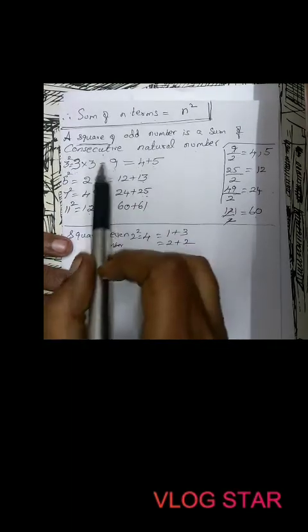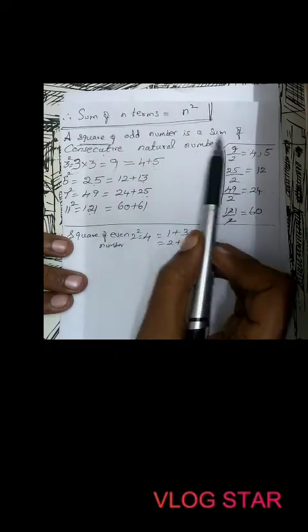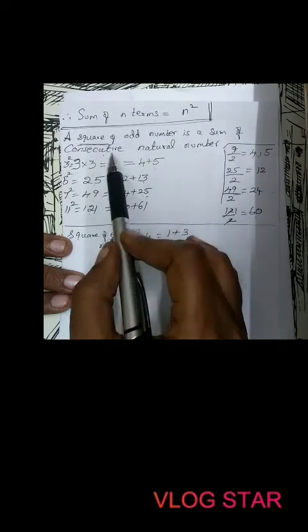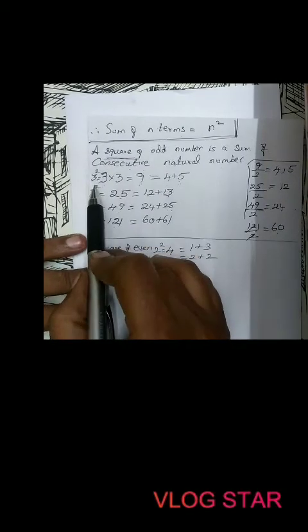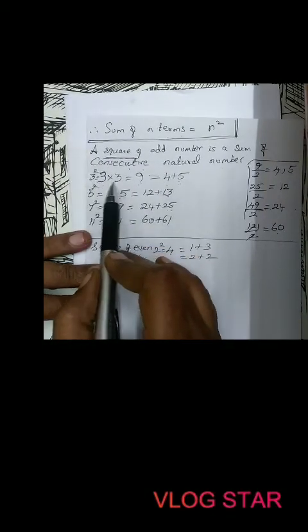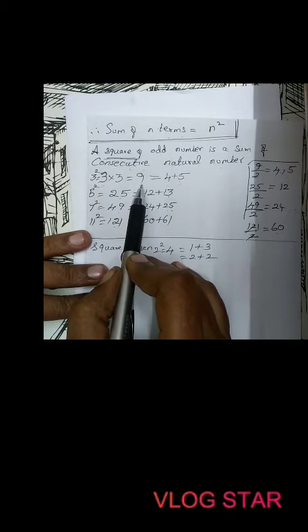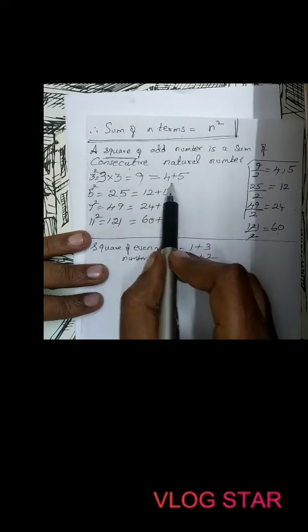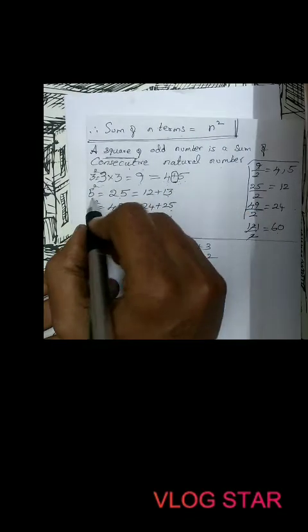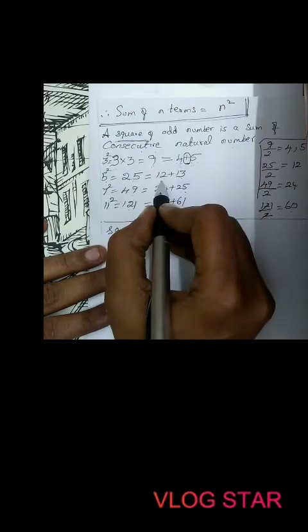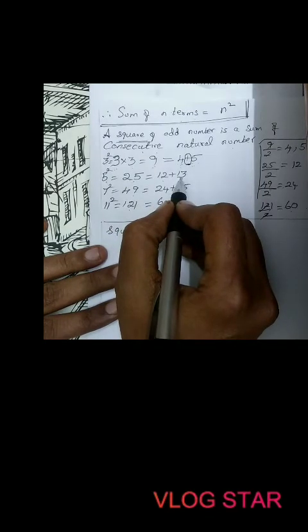Now the next property pattern: a square of an odd number is a sum of two consecutive natural numbers. Consecutive means the immediate next number. Suppose when you take 3 squared: 3 times 3 is 9. This 9 can be written as 4 plus 5 — consecutive natural numbers. 5 squared is 25, and 25 can be written as 12 plus 13, the next consecutive natural numbers. 7 squared is 49, and 49 is 24 plus 25.